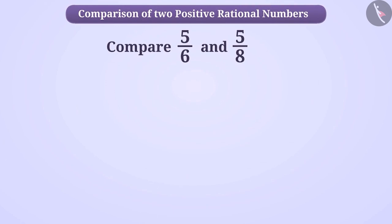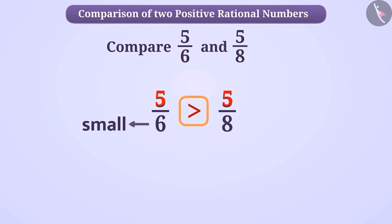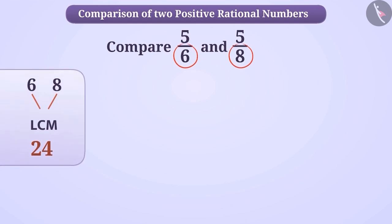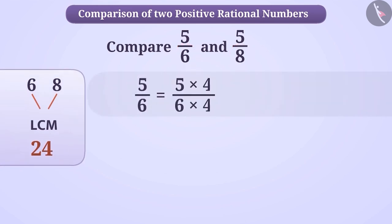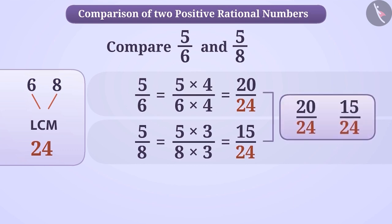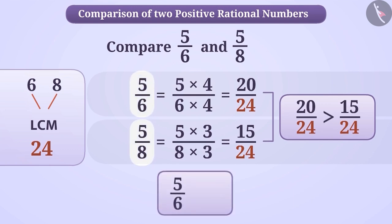Similarly, if the numerators of two rational numbers are equal and their denominators are unequal, then the rational number whose denominator is smaller is the greater rational number. For example, in 5/6 and 5/8, 5/6 is greater than 5/8. Let's confirm this. If we make their denominators equal with the help of the LCM method, then we get the equivalent rational number of 5/6 as 20/24 and 5/8 as 15/24. Now we can say that 20/24 is a greater rational number than 15/24, which means 5/6 is a greater rational number than 5/8.